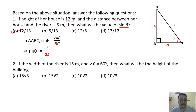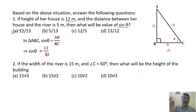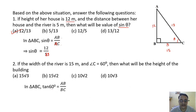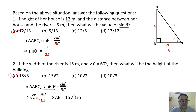Question 2: If the width of the river is 15 meter and angle C = 60°, find the height of the building. BC = 15m, and using tan 60° = AB/BC: √3 = AB/15. Cross multiplying gives AB = 15√3. The correct option is option A.